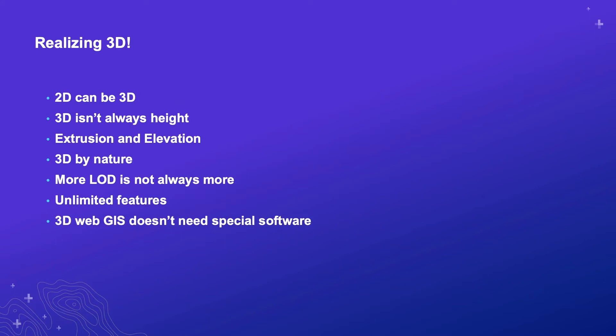I'm going to clarify a lot of these questions throughout this presentation. Here are the key points I want you to take away, which I refer to as realizing 3D. First, 2D can be 3D — I'll go over what that means. Second, 3D doesn't always need to be heights. Third, extrusion and elevation are two common concepts I see a lot of confusion around, and I'd like to explain each and how they complement and differ from each other. Also, more level of detail — LOD — is not always more, and I'll talk about what that is and how to think about it.